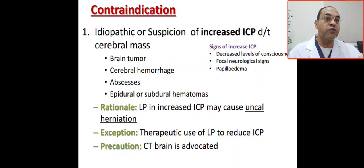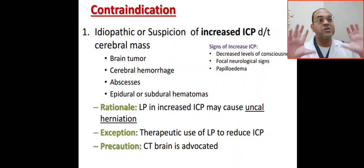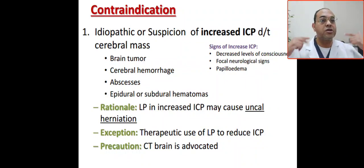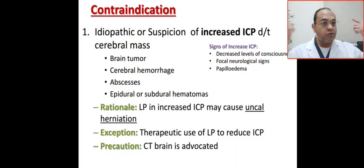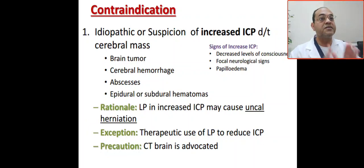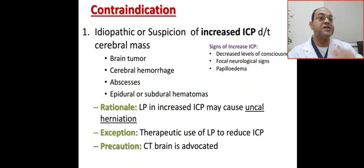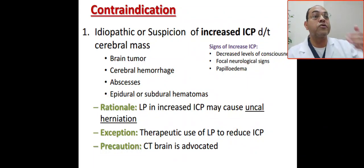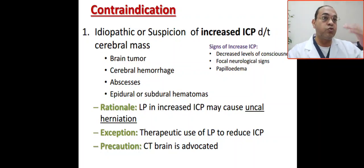The causes of increased intracranial pressure are space-occupying lesions, hemorrhage, hematoma, or abscess. The signs include decreased level of consciousness, focal neurological signs, and papilledema. Increased intracranial pressure is a contraindication for lumbar puncture because LP may cause tonsillar or brain herniation, especially in the infant.